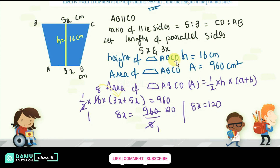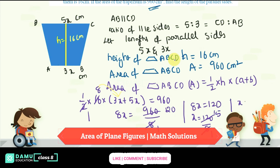So 8x equals 120. Then x equals 120 divided by 8. Since 8 fives are 40, x equals 15.